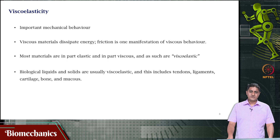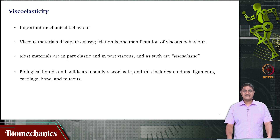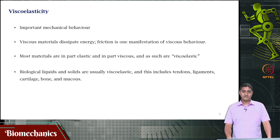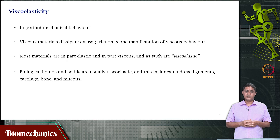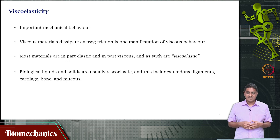Biological materials such as bones, tendons, ligaments, cartilage, and relatively harder tissues such as bone almost always show viscoelastic behavior — both viscous and elastic characteristics — which makes them slightly challenging to model. If you use only an elastic model for bone, it will not capture the entire behavior. There are situations where this model will fail.